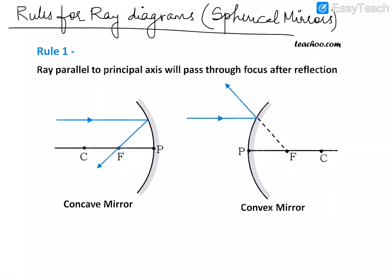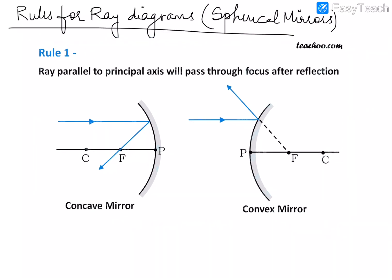To draw ray diagrams in case of image formation for spherical mirrors, there are some rules which are required to be followed. If you remember these rules, you can easily draw the ray diagrams. The first rule says that the ray which is parallel to the principal axis will pass through the focus after reflection. Let us apply rule one to both mirrors.